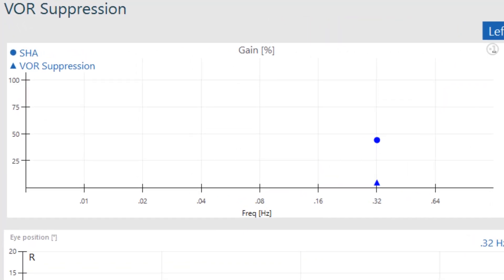The results are very simple to read. The circle is the gain recorded during the sinusoidal harmonic acceleration. The triangle is the gain recorded during VOR suppression.